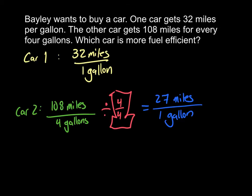The way I looked at this is we have the first car, which gets 32 miles per gallon. This is already in the unit rate where your denominator is 1. So I'm just going to leave that exactly as it is, and I'm going to convert car 2 into the unit rate.